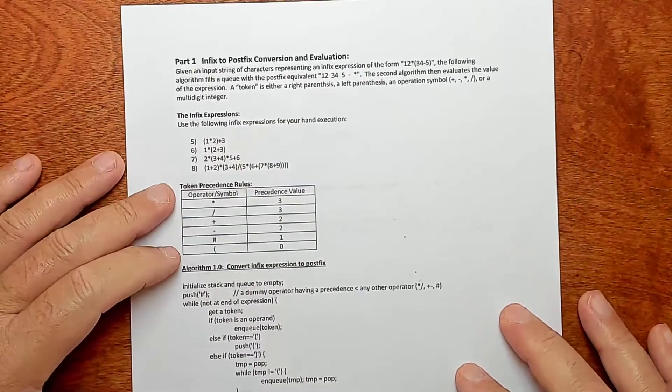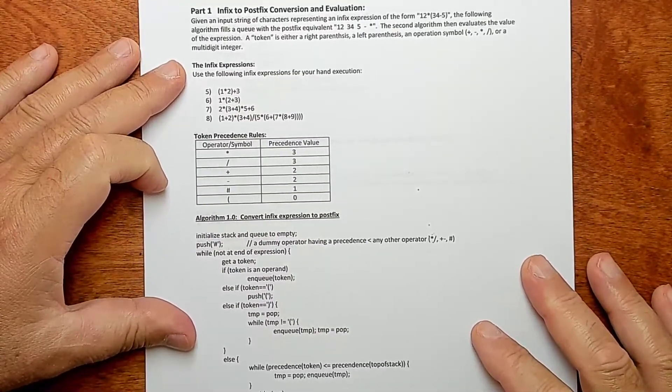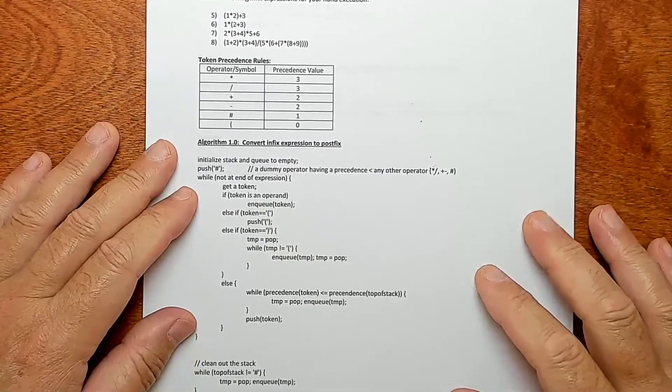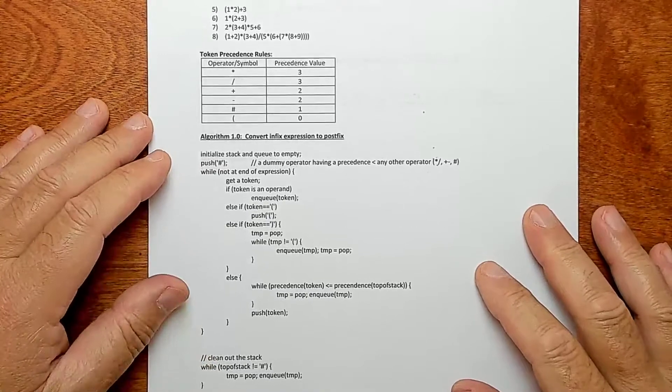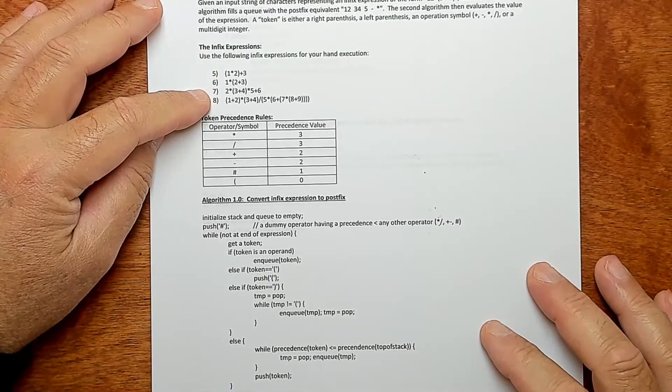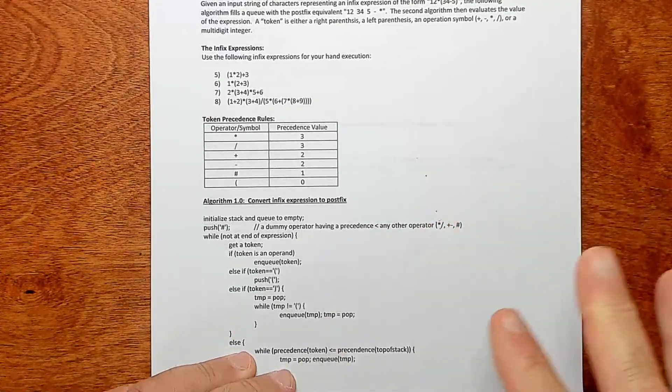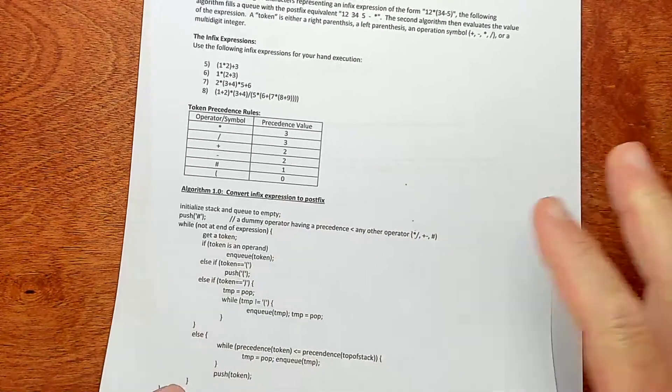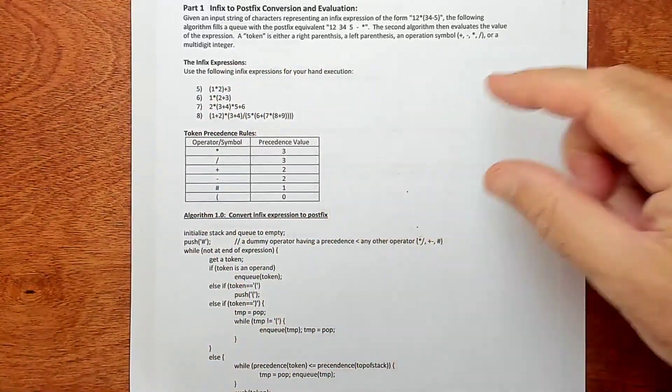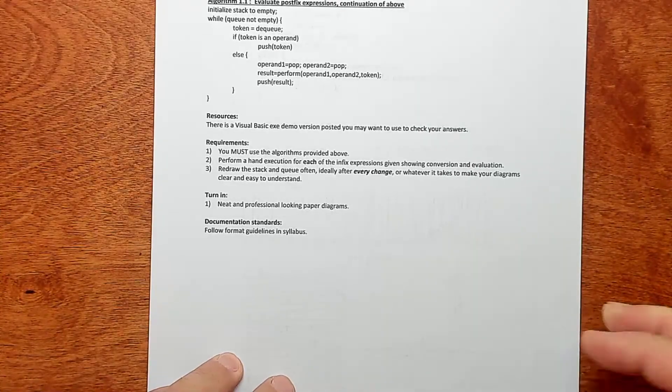Okay. The second algorithm is the one that I went over in the notes. Okay. Where I hand executed this in the previous algorithm. I want you to do the same thing, but for these four expressions right here. Okay. And so draw it up nice in a computer with show the stack lots of times and show the stack changing every time. Okay. That's about it.